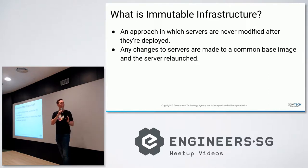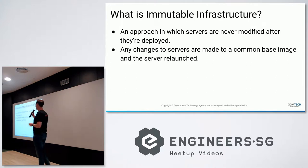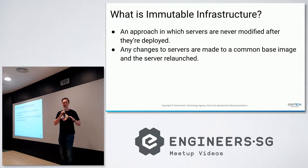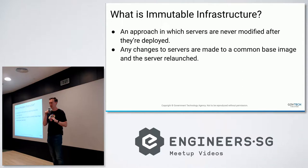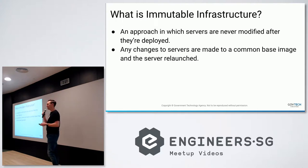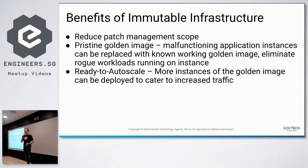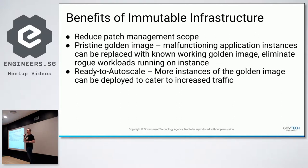Immutable infrastructure is an approach for deployment where servers are never modified after they're deployed. Changes are made to a golden image — a common base image — and then the server is relaunched. It takes away the idea of manually patching something, bringing everything back to a repeatable process. This reduces the patch management scope: instead of patching manually, you rebuild the image and redeploy. If something's going wrong, you can replace it without having to debug, or put it aside to investigate for security vulnerabilities.